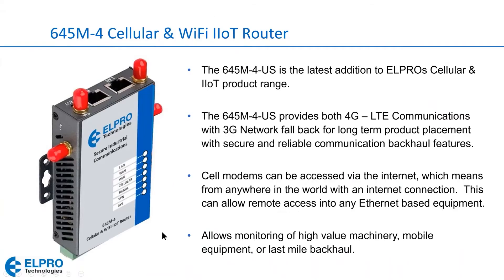This is the product we're going to talk about today. The 645 M-4 is a 4G cellular router. It also has 3G network fallback. With these cellular modems, they can be accessed anywhere in the world that you have access to the internet. So if you stick these on vehicles, you can find out where the vehicles are located and monitor any equipment inside those vehicles.